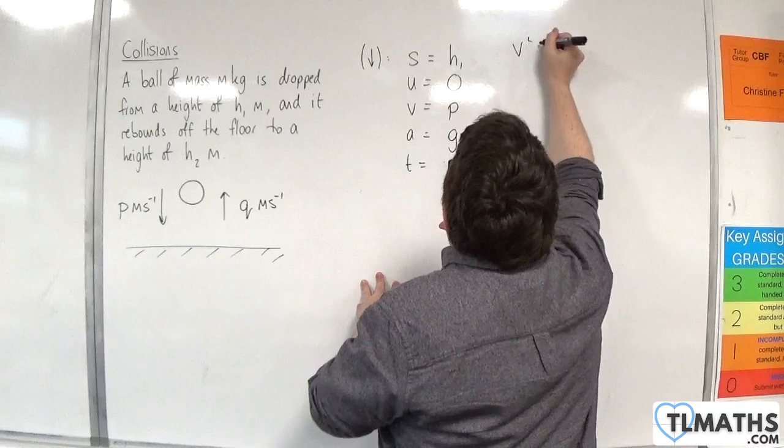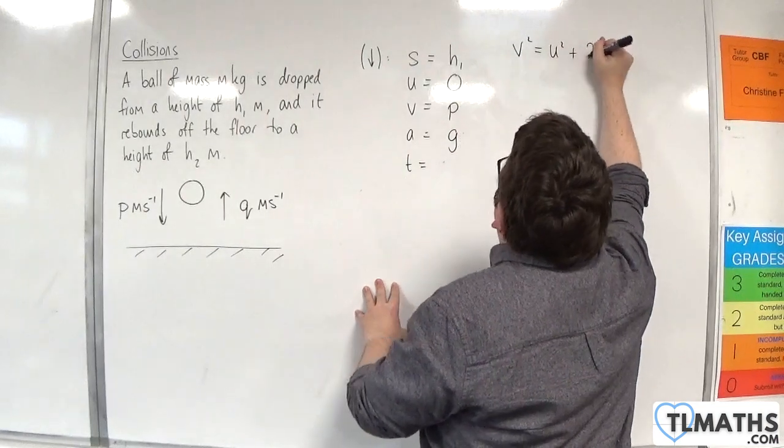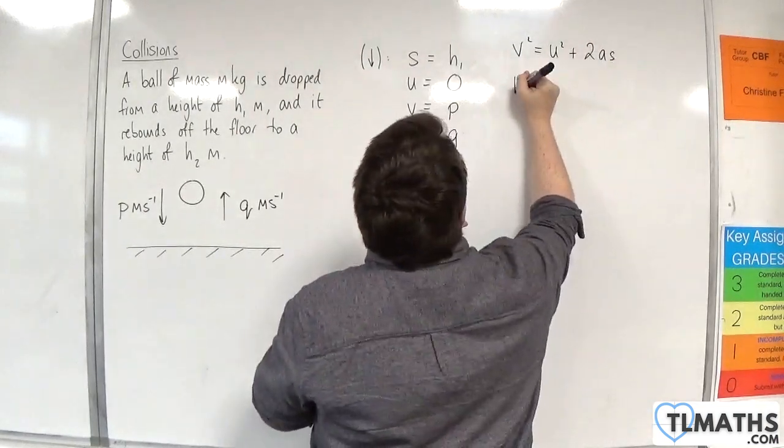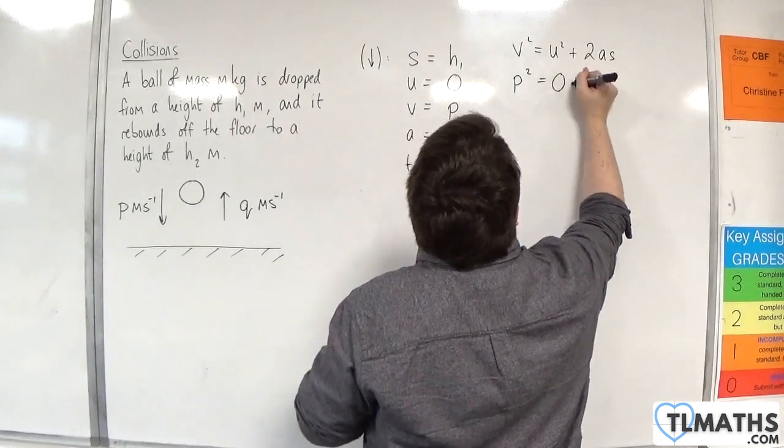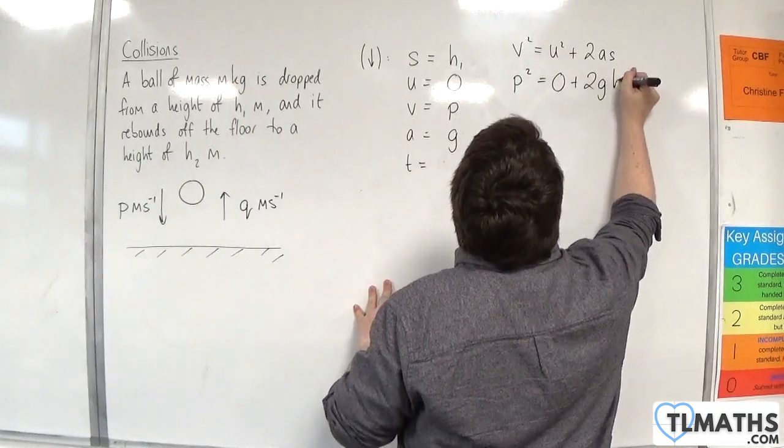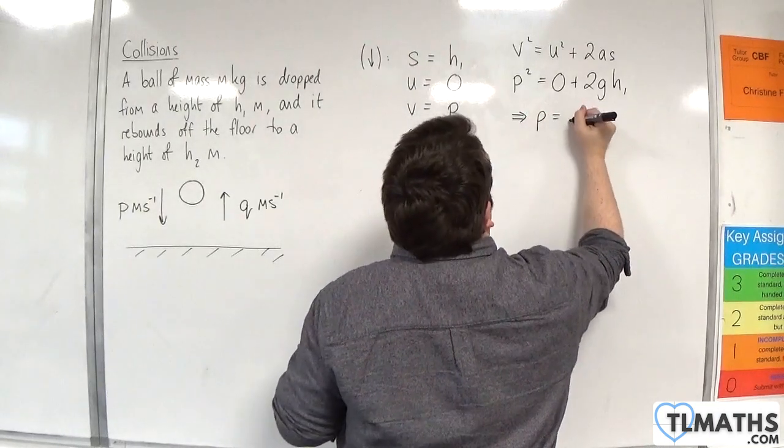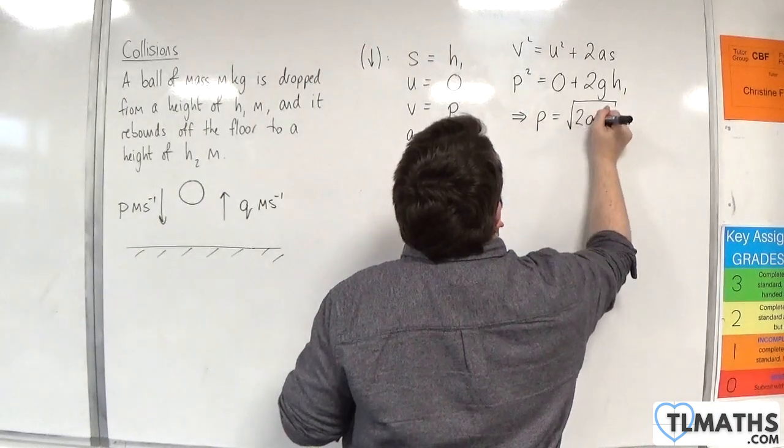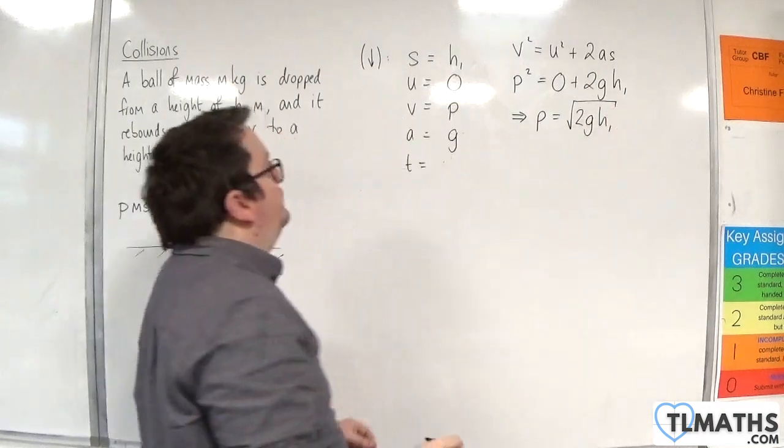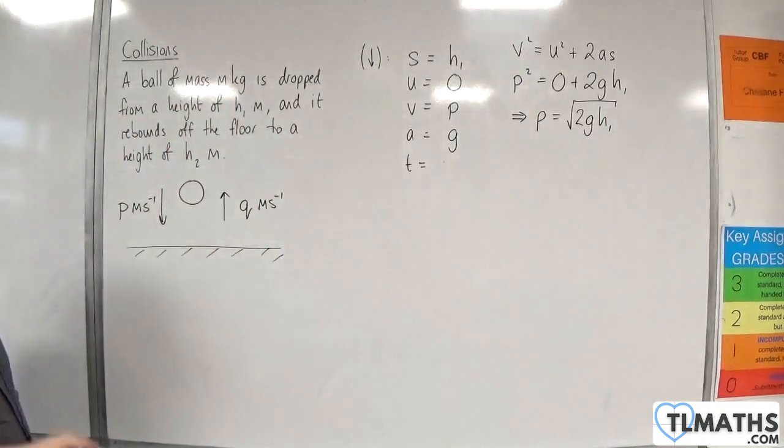So if we use v squared equals u squared plus 2as, we can write p squared is going to be equal to zero plus 2gh1. So p is the square root of 2gh1. Okay, so that's good.